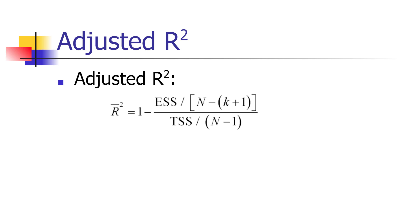If the number of observations is large, that's going to be very close to R-squared, because the difference between n minus 1 and n minus the quantity k plus 1 will be relatively small when n is large relative to k.